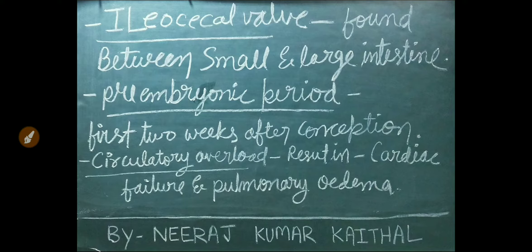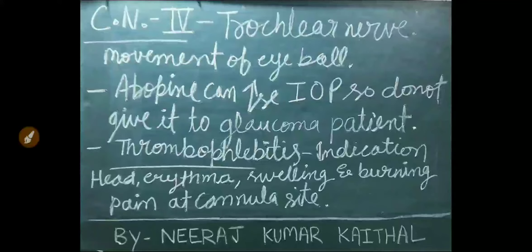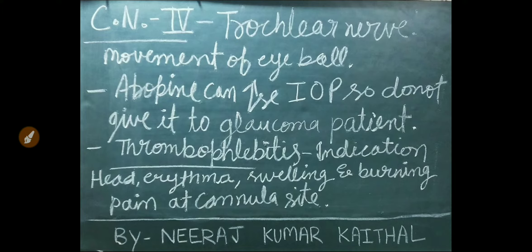Preembryonic period is the first two weeks after conception. Circulatory overload results in cardiac failure and pulmonary edema. Cranial nerve number 4 is trochlear nerve, and it is related with movement of eyeballs.